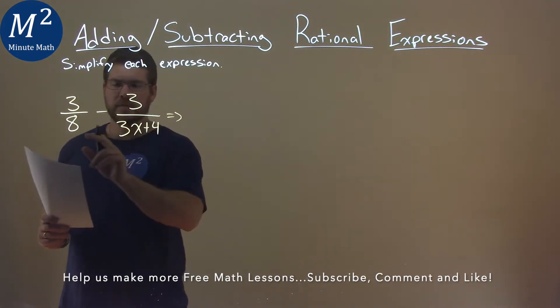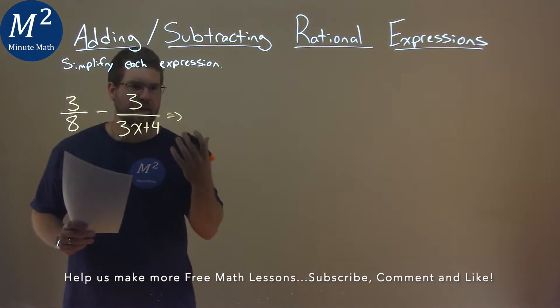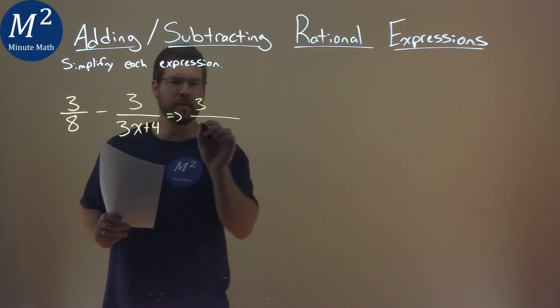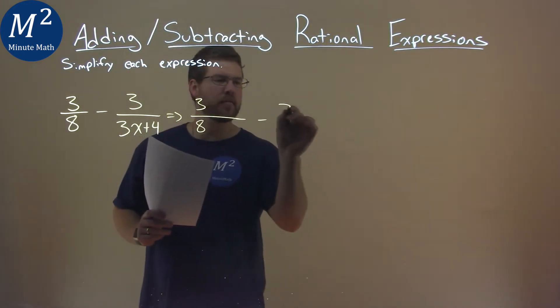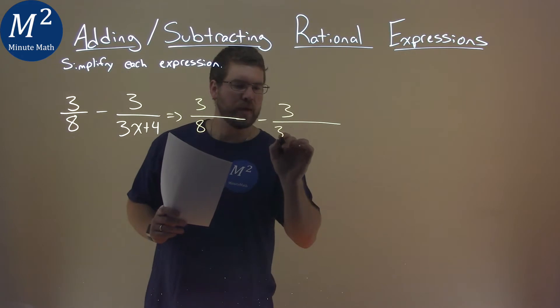We do not have the same denominator here, so we need to get that. So I'm going to rewrite this, 3 over 8 with some space,